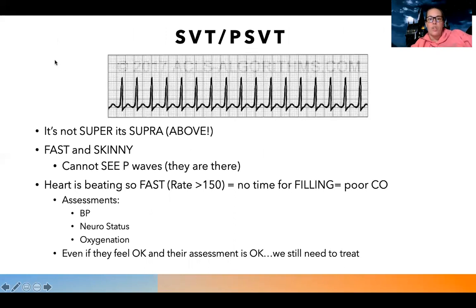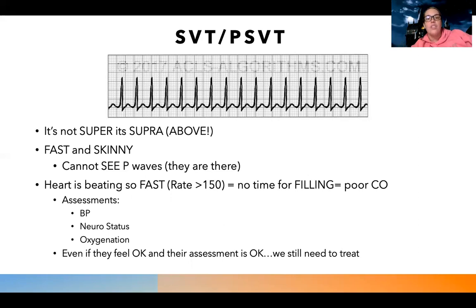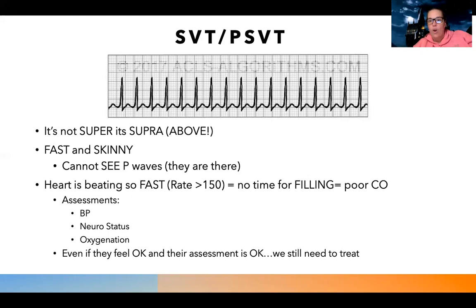The next rhythm is SVT or PSVT - supraventricular tachycardia. I want to clarify: this is not 'super,' it's 'supra,' and supra means above. People hear 'ventricular' and think: wait, I thought we were talking about atrial or top-of-the-heart problems. This is a top-of-the-heart problem because supra means above. If this rhythm is called supraventricular, what's above the ventricles? The atria - the top of the heart. So the name of this rhythm is literally 'above-the-ventricle tachycardia,' and it's a top-of-the-heart problem.